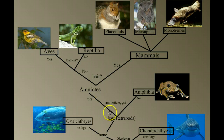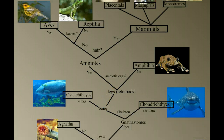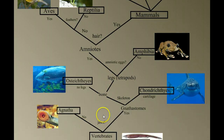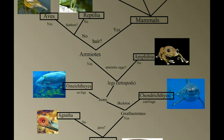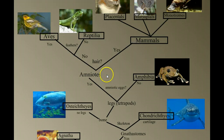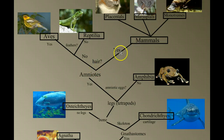If a vertebrate has a jaw, has a skeleton made of bone, has legs, and has an amniotic egg, it's an amniote. The next question we need to ask ourselves is, does this animal have hair? If the answer is yes, we go to mammals.